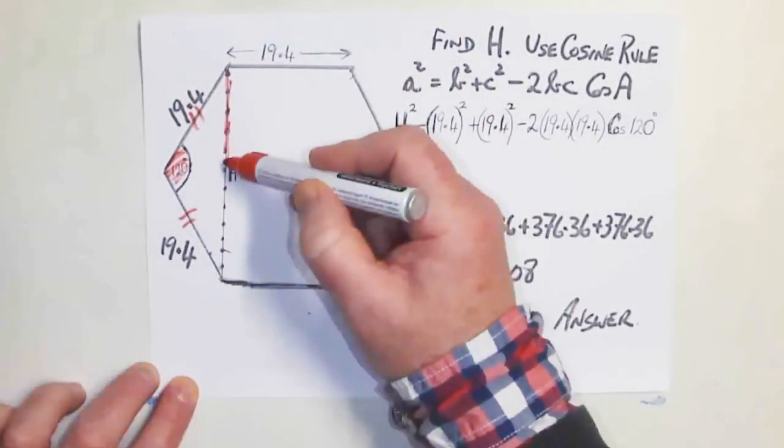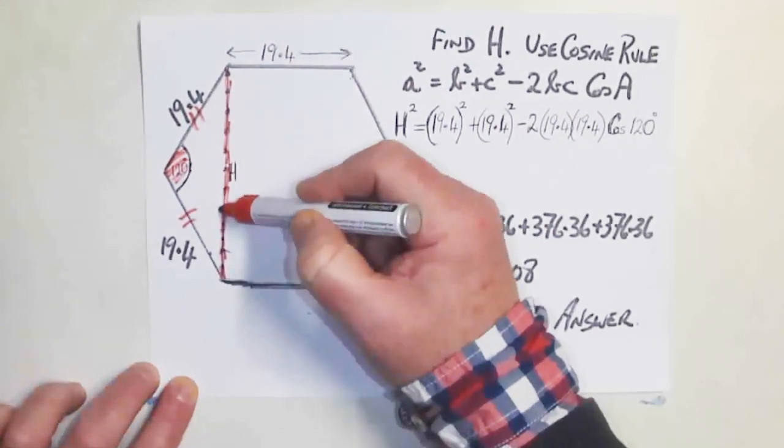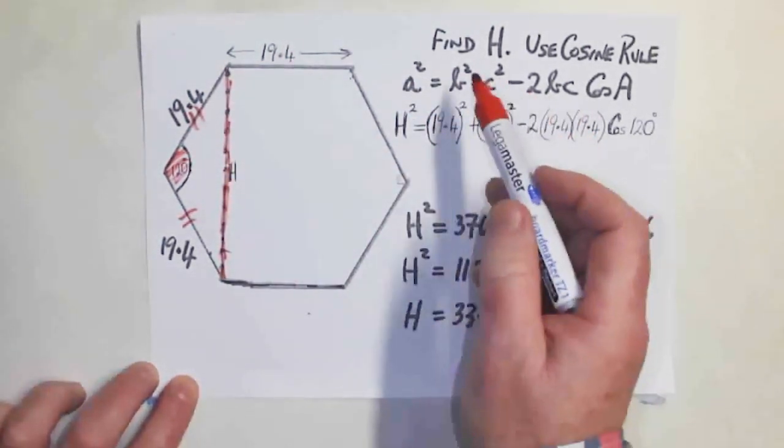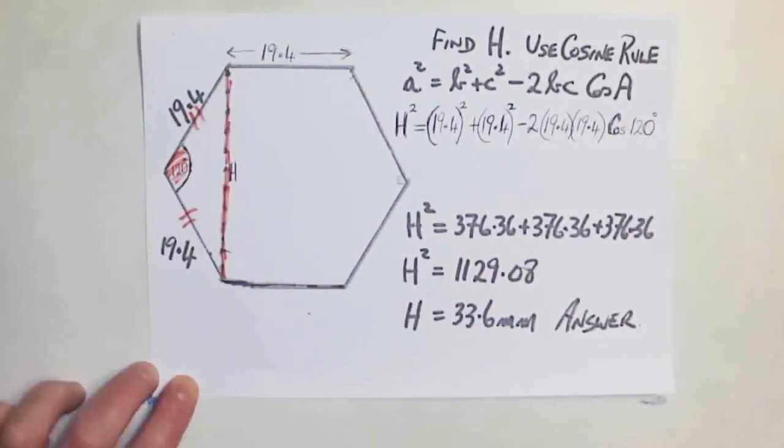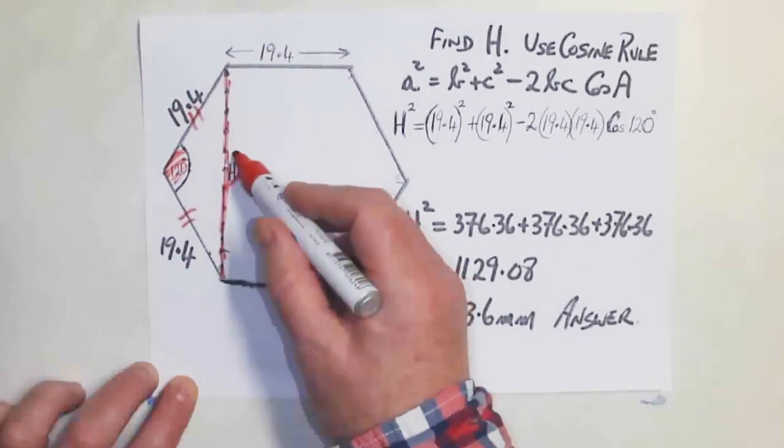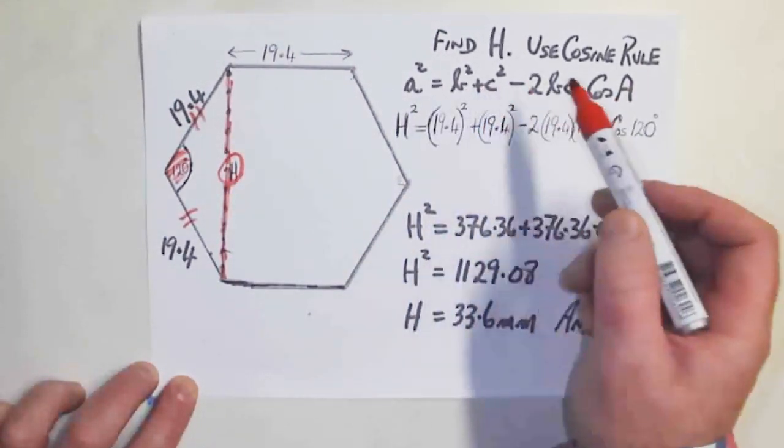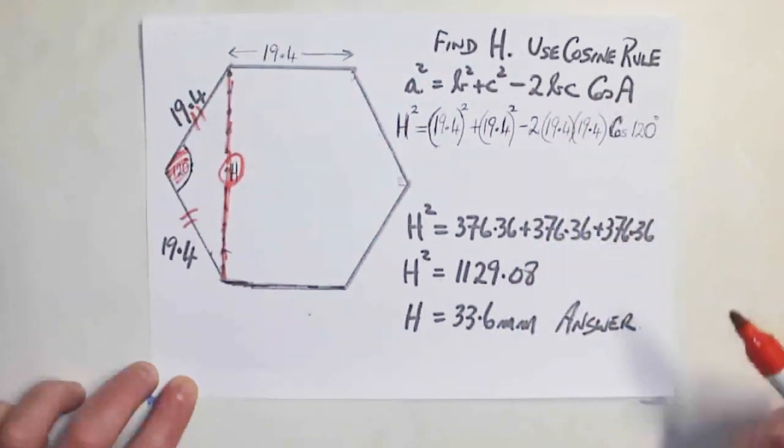We know that this side here and this side here are equal and they're 19.4 because they gave us that. And this H, this red line here, is the distance between the jaws. Now I've used the cosine rule. I could do it another way. There's several other ways of doing it. But I'll call this the letter H. And the cosine rule is that A squared is equal to B squared plus C squared minus 2BC cosine A.